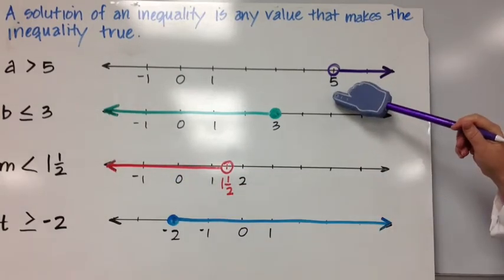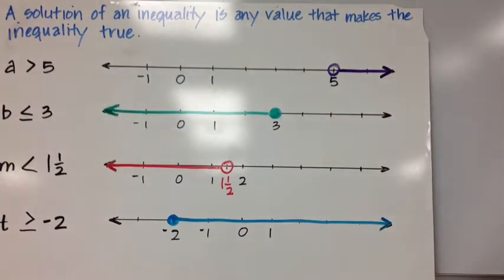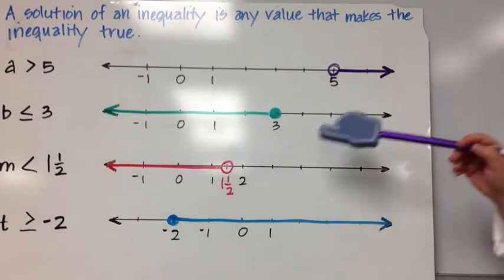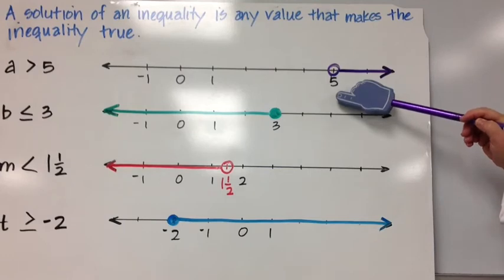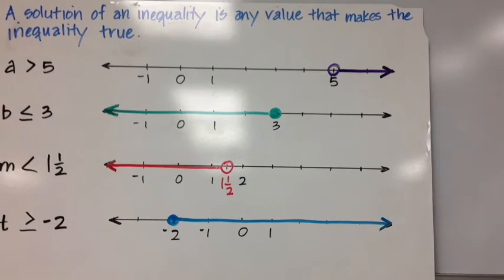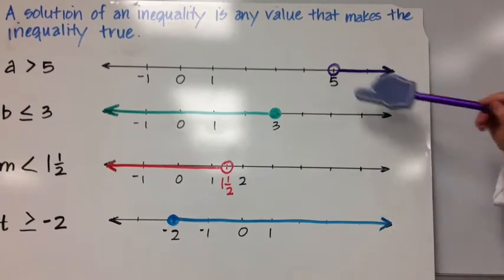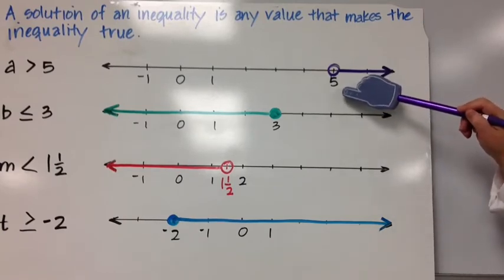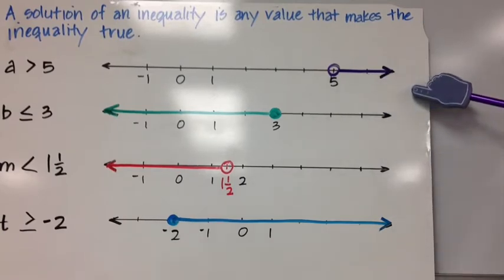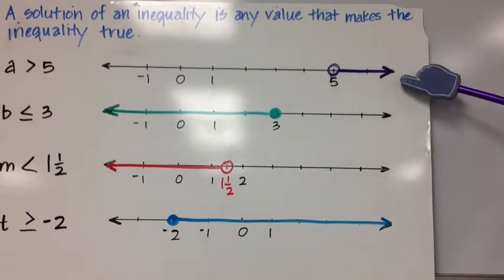The graph starts at 5, but is 5 included in the solution set? No, because A is greater than 5. Since 5 is not in the solution set, we start our graph with an open circle, meaning 5 is not included — but 5.00001 and every number bigger than 5 is in the solution set. We have an open circle as the endpoint, and the graph goes to the right.